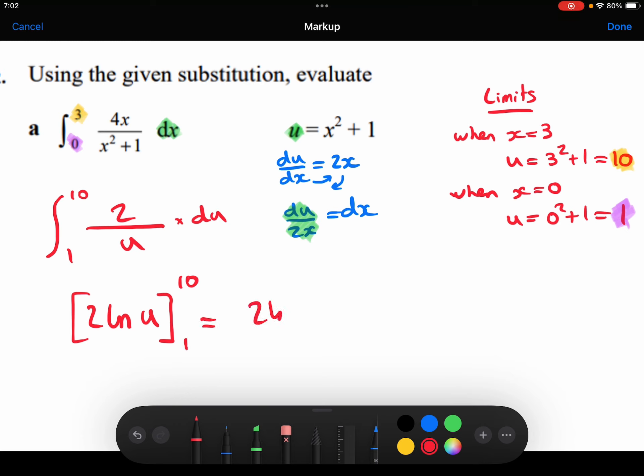Substituting 10 in, substituting 1 in and taking them away. ln 1 is just 0, so this whole thing will just turn into 2 ln 10.